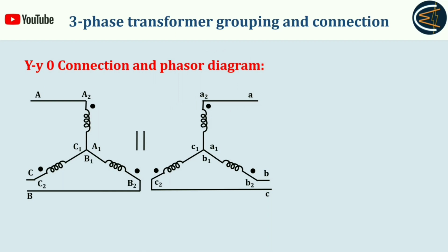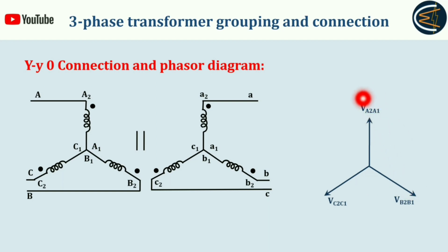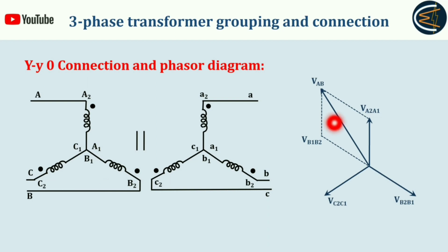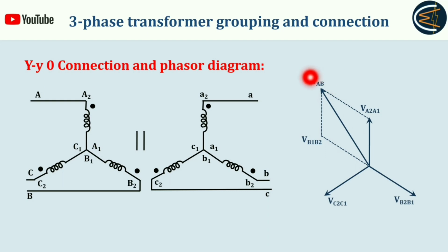For the primary side, which is star connected, these are the primary side phase voltages: V_A2A1 is the A phase voltage, V_B2B1 is the B phase voltage, and V_C2C1 is the C phase voltage. They are balanced in nature. Now V_AB is nothing but the vectorial sum of V_A2A1 and V_B1B2. The resultant phasor will be V_AB — that is the line voltage of the primary side.